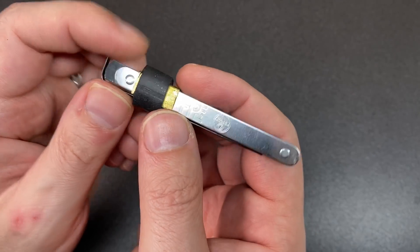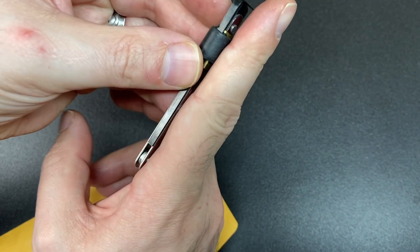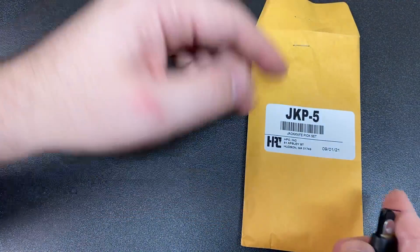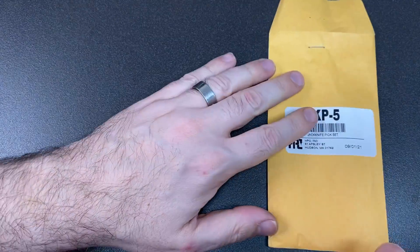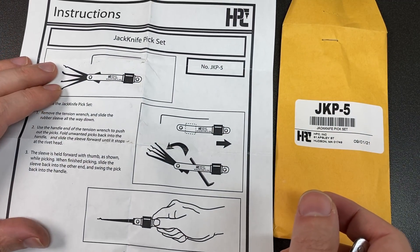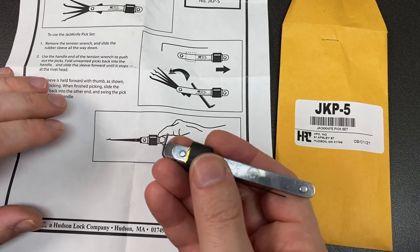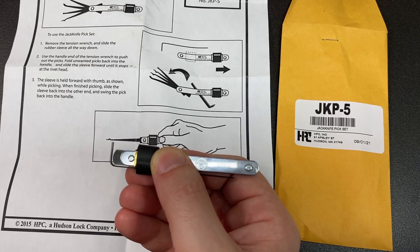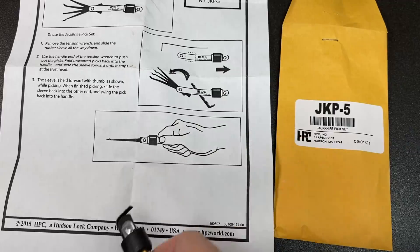I think this jackknife pick set is only about the length of my index finger. It comes in a little case—it's the JKP5. I say case, what I mean is cardboard envelope. And it does come with some instructions which are interesting for the most part. They're alright apart from the way they're suggesting you hold the picks, that just doesn't seem particularly natural to me, but anyway, it is what it is.